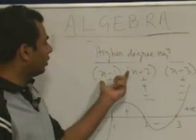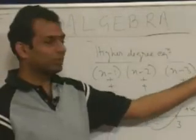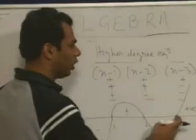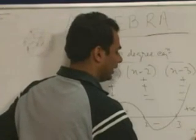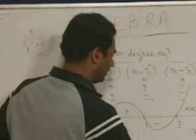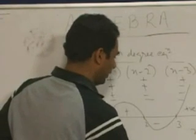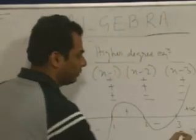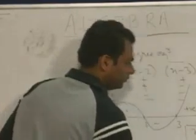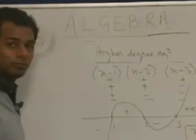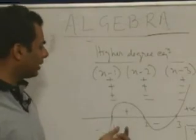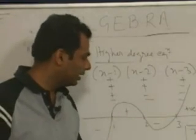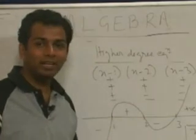But here we are asked about the product being greater than 0, which is only possible if x is greater than 3 or x is lying between 1 and 2. That is the complete solution. Had it been negative, we should take x less than 1 or x lying between 2 and 3.